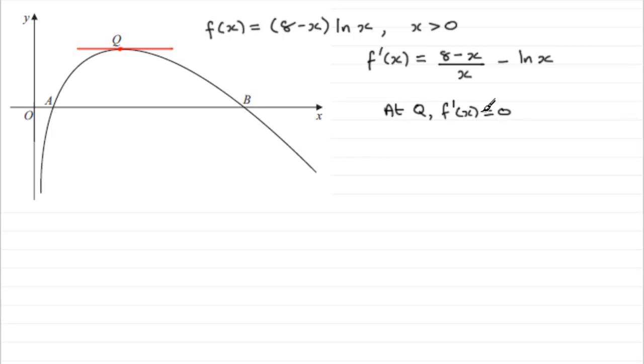So all we've got to show then, if it lies between 3.5 and 3.6, if we were to take two points, one to the left of Q and one to the right, let's imagine that this x-coordinate here is 3.5, and this x-coordinate here is 3.6. What we would expect to see is that at 3.5, we've got a positive gradient, and at 3.6, we've got a negative gradient. That tangent's not drawn that well, but hopefully you get the point.